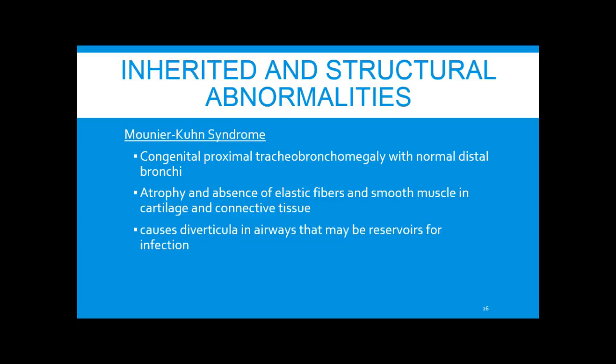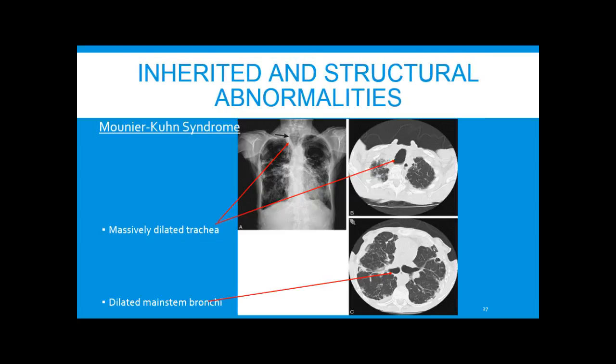Mounier-Kuhn syndrome is a congenital proximal tracheobronchomegaly with normal distal bronchi. There are no elastic fibers or smooth muscle in the cartilage and connective tissue, which causes diverticula. On imaging you see a massively dilated trachea on both X-ray and CT scan, with dilated main stem bronchi but relatively normal distal airways.